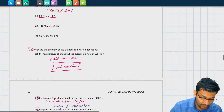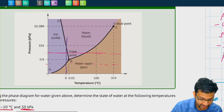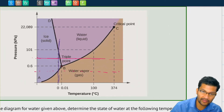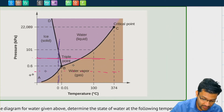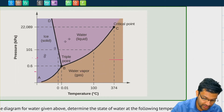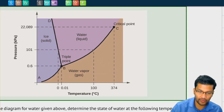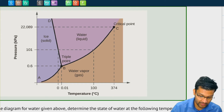That's really how we use phase diagrams — it's just a way to tell us what phase we'll be in at a certain pressure or temperature, and what phase we'll change to if we change the pressure or temperature.